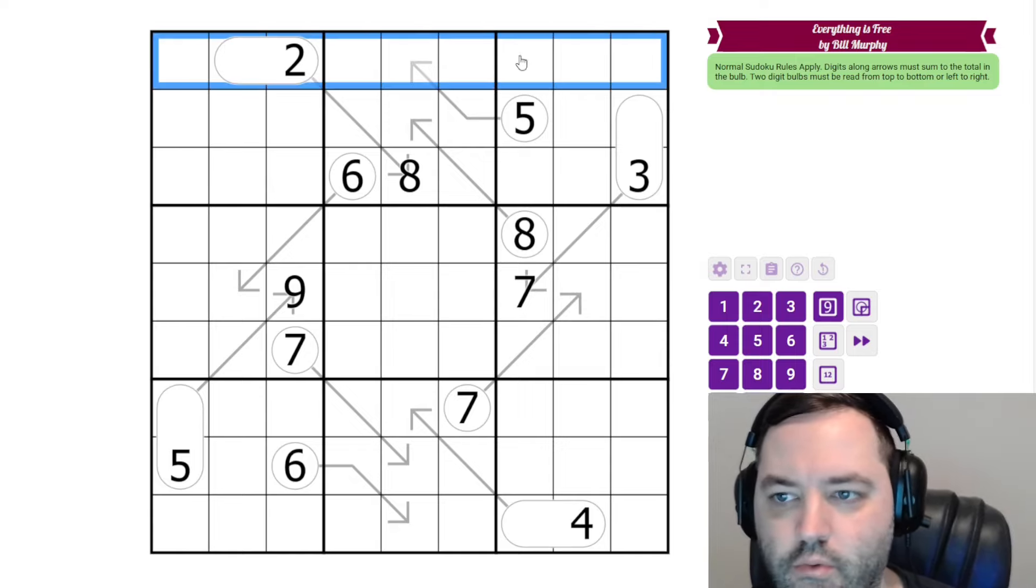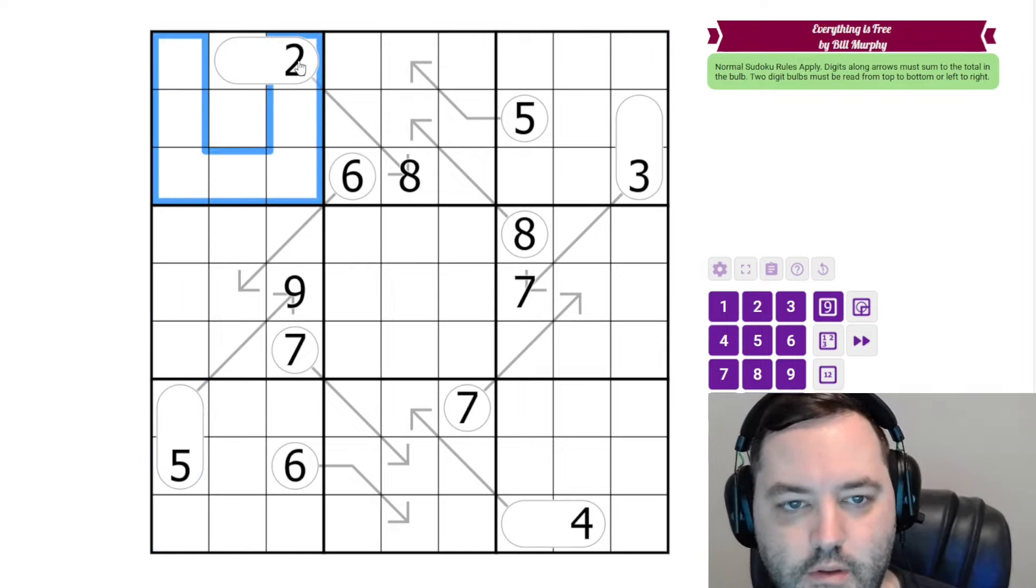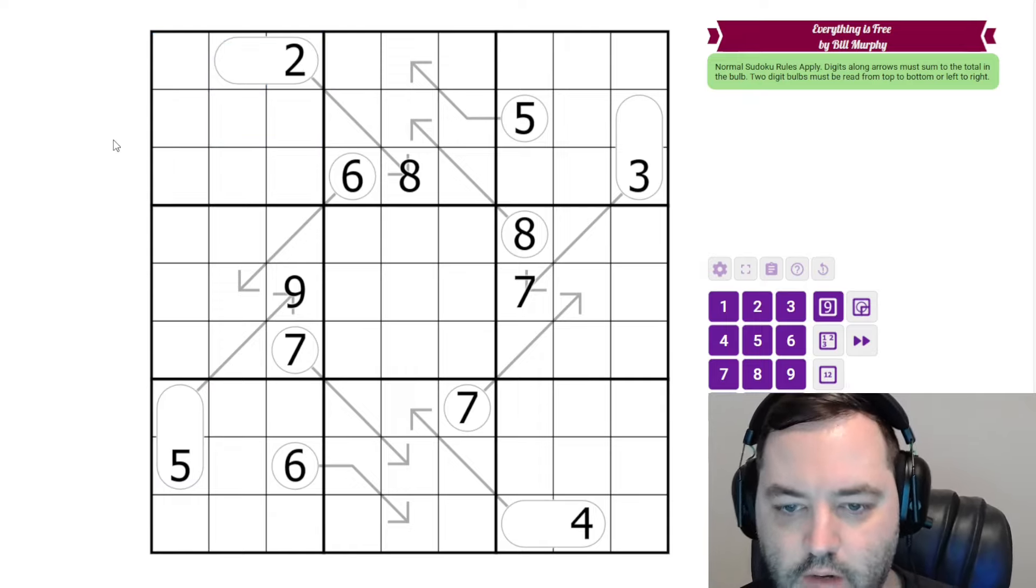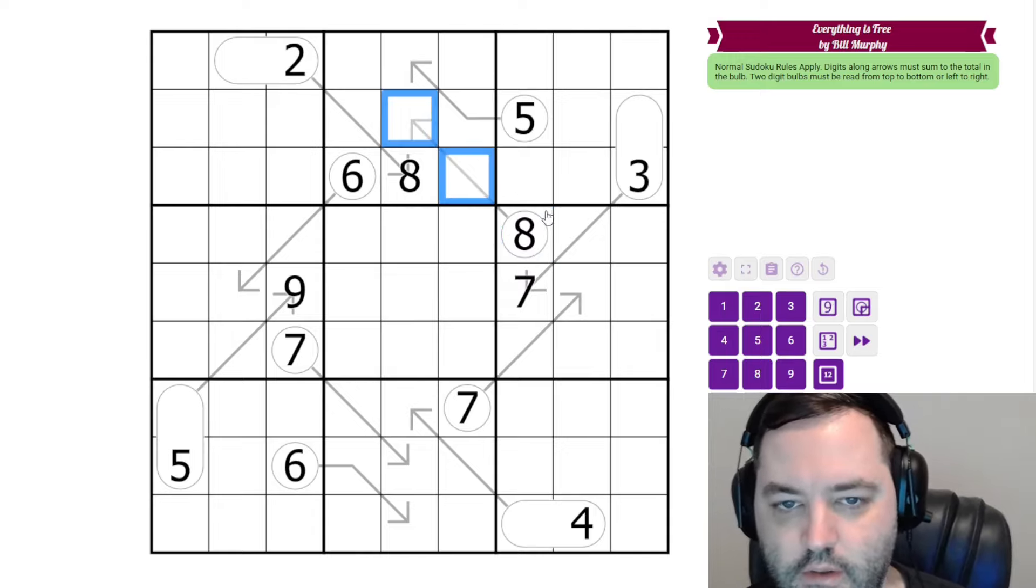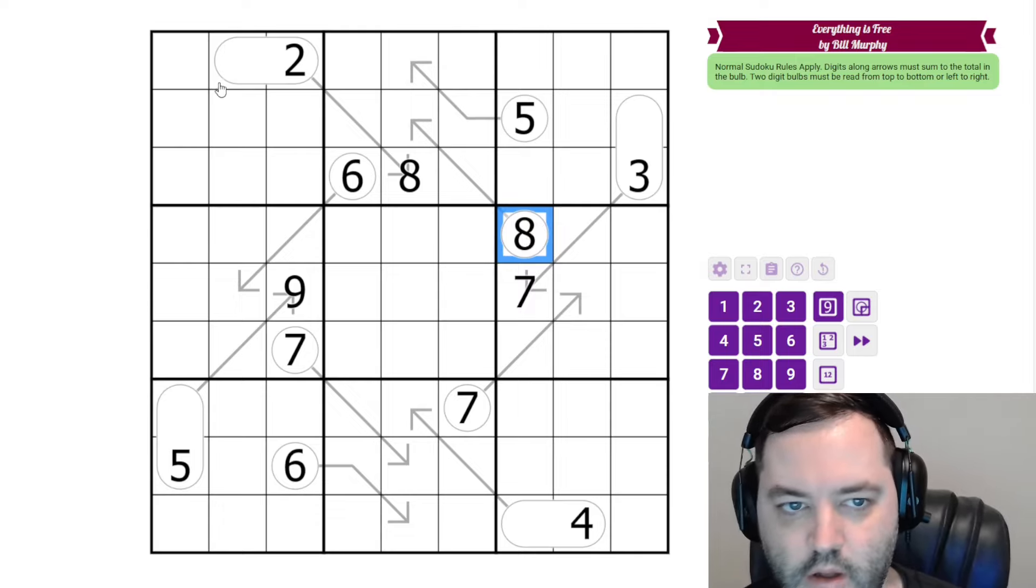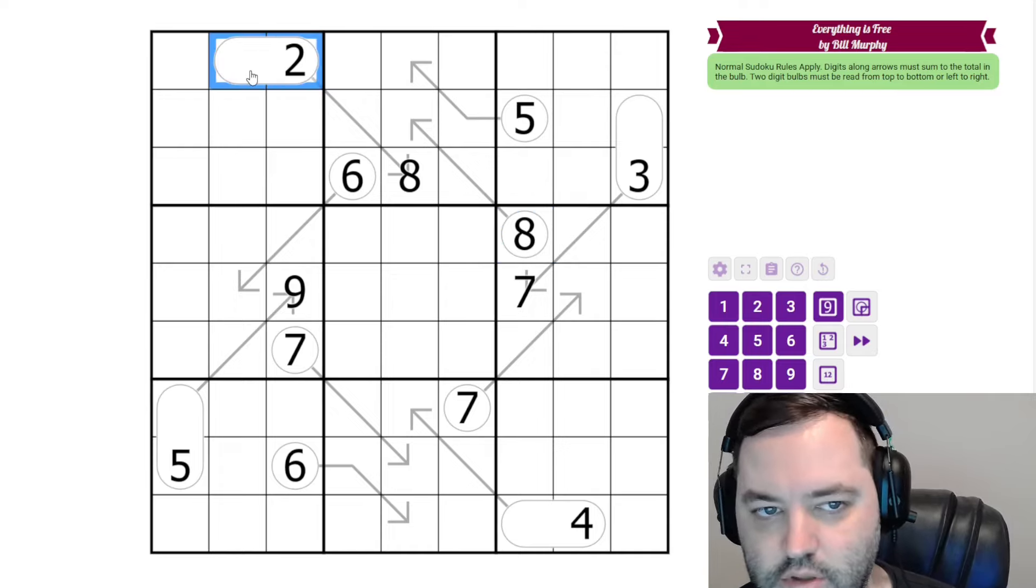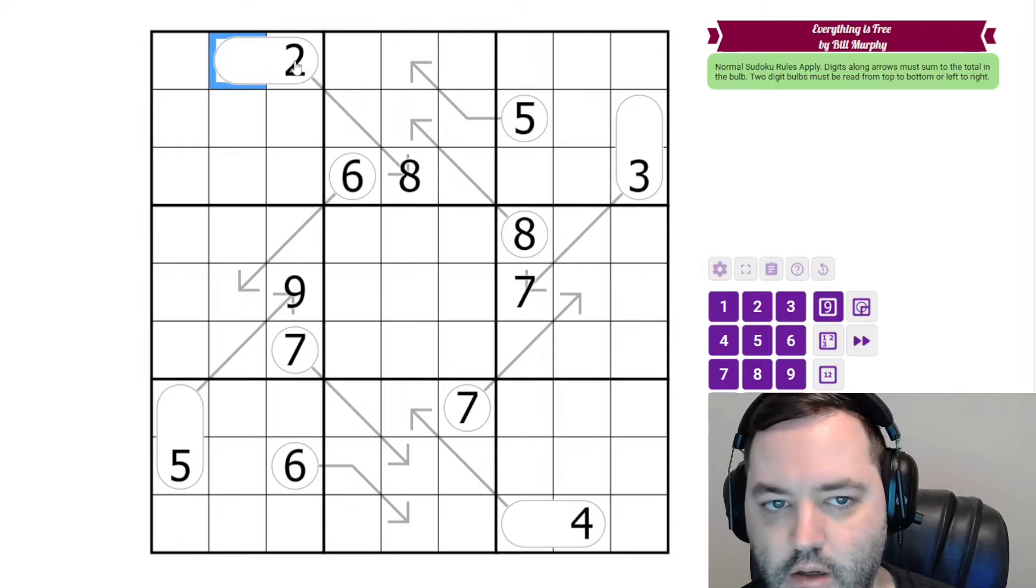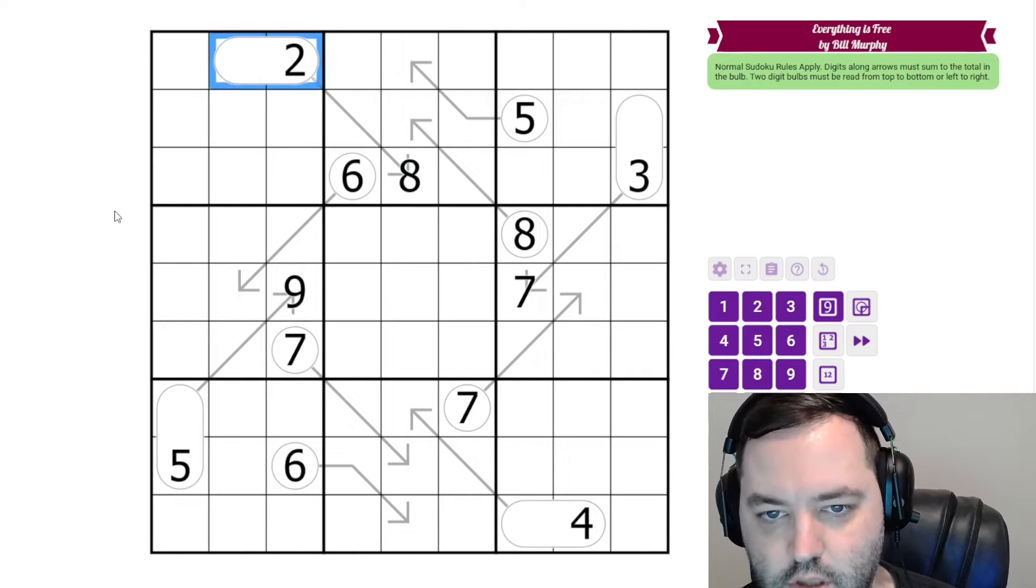Normal Sudoku rules apply, 1 to 9 in each row, column, and 3x3 box. Additionally, we have arrows in the grid, and some of these arrows have a circle. So wherever we have a circle, the cells on the arrow sum to the digit in the circle. Some of them are pills, so instead of a single digit total, we have a two-digit total, and these are read left to right or top to bottom. So the sum of these two cells equals this two-digit number.